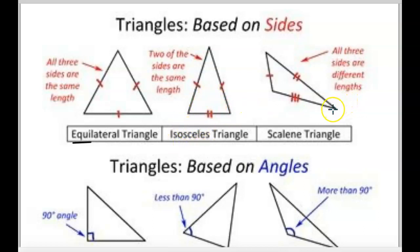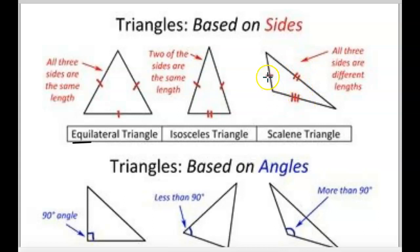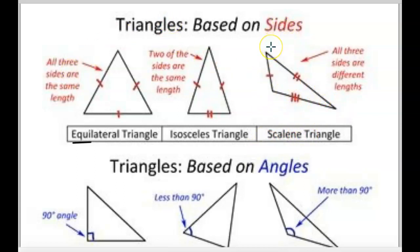The last one is a scalene triangle. You'll see they have one slash, two slashes, and three slashes, because all three of those lines are different lengths. So that's scalene. These are triangles that are based on the sides, on these lines.